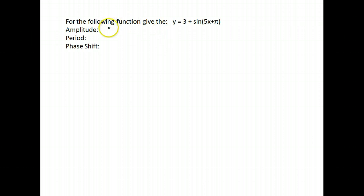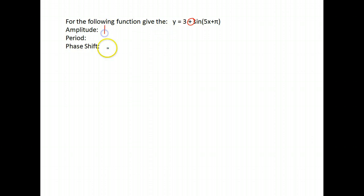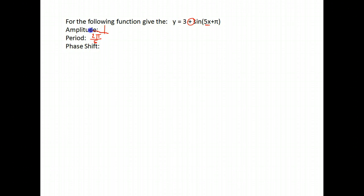Here is yet another example — find the amplitude, period, and phase shift. For amplitude, look directly in front of your sine; all we have is a plus sign, which means our amplitude is just 1. For the period, we take the normal period for sine, which is 2π, and divide by the number directly in front of x, which is 5. So the period will now be 2π over 5 instead of 2π.